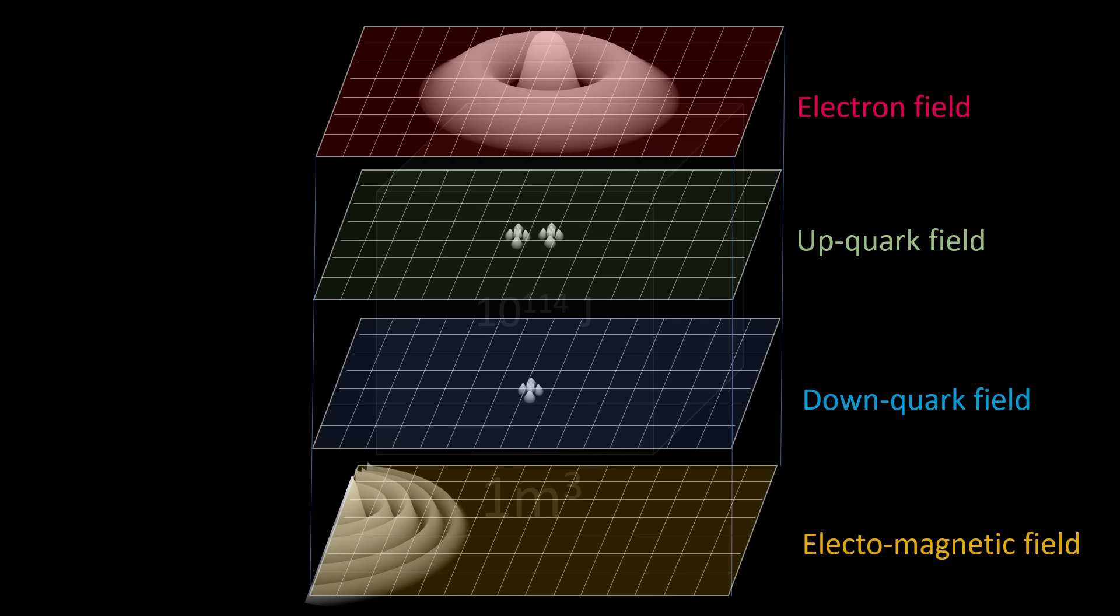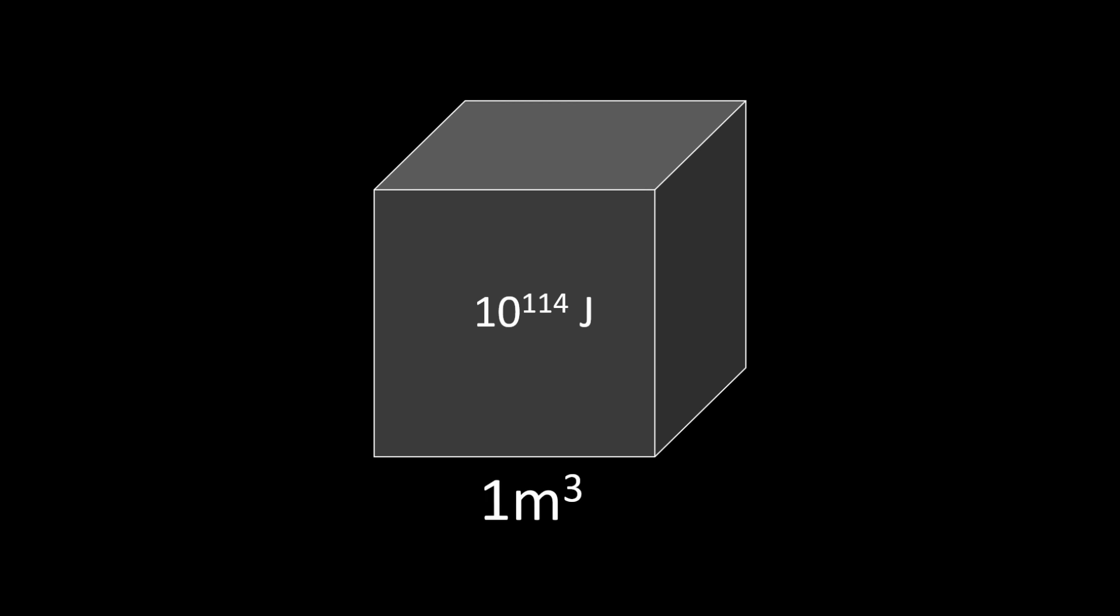So, what is this lowest energy content of a quantum field? Well, as for the values that pop up everywhere, it must be somewhere around 10 to the 114 joules per cubic meter of space, give or take a few orders of magnitude.